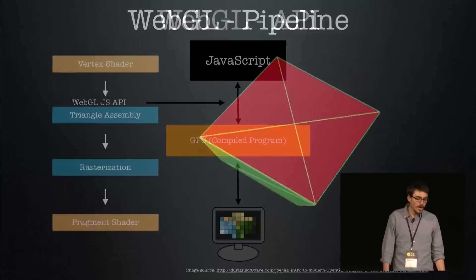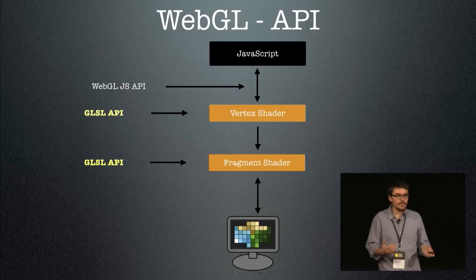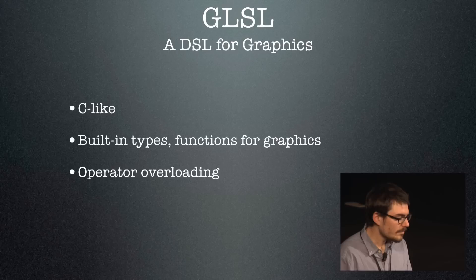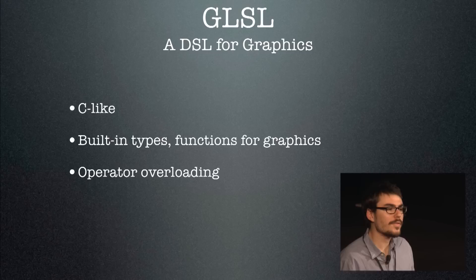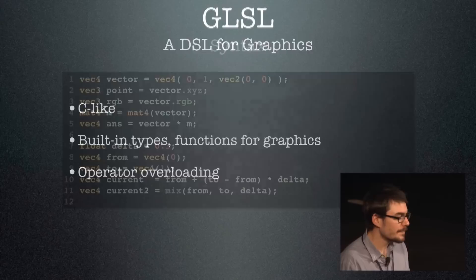What's interesting about WebGL is that you have a JavaScript API to send data structures to the GPU, but you also have this domain-specific language to create graphics really fast. This language was designed for graphics. It's a C-like language with a lot of built-in types and functions for graphics. And it also has something I'm really interested in: operator overloading. Here's a sample of how this looks.